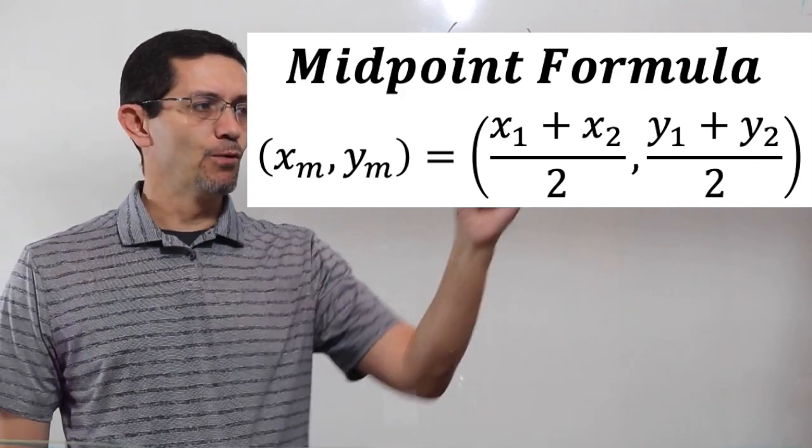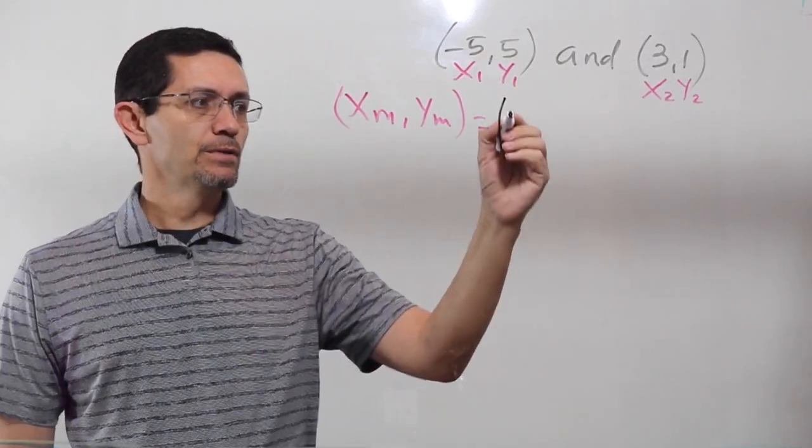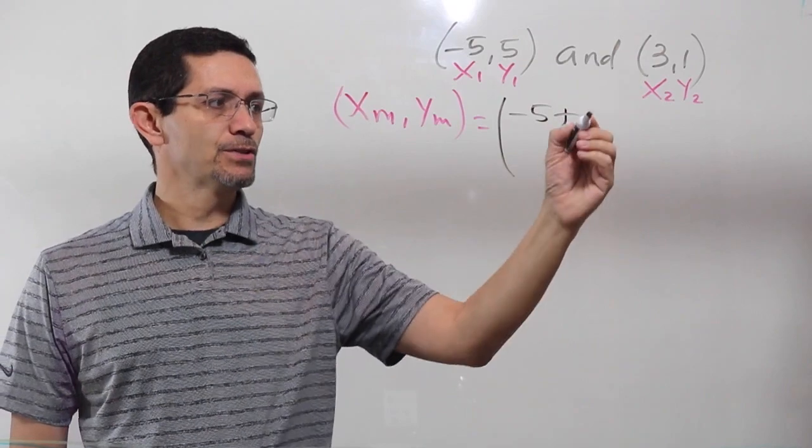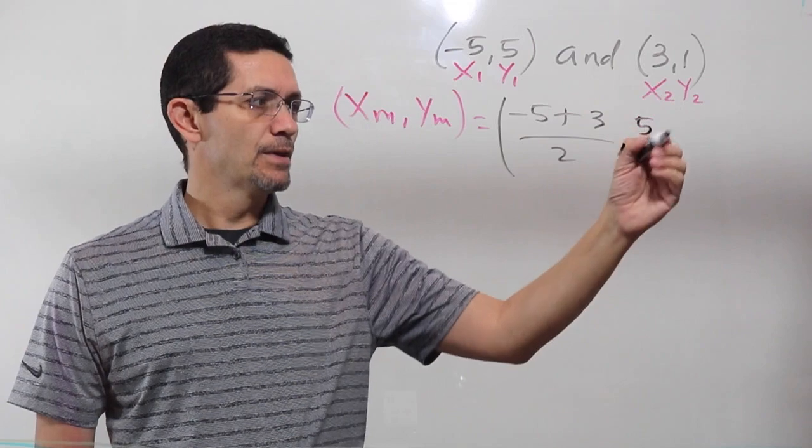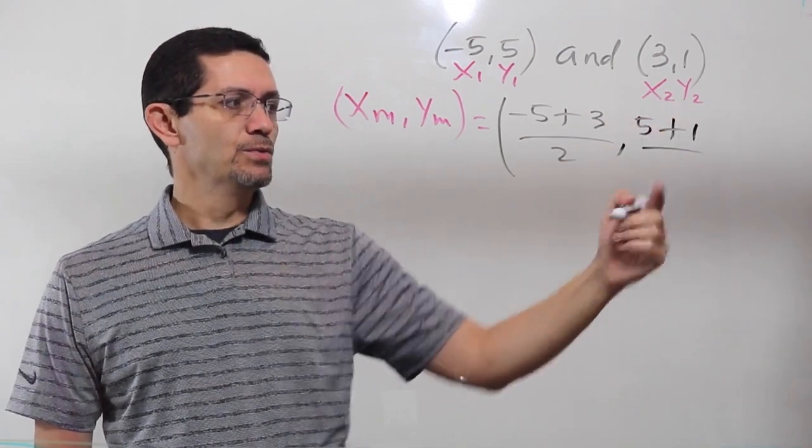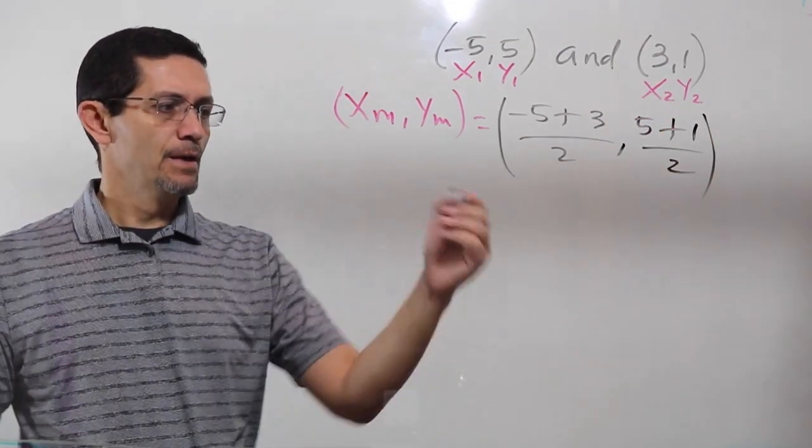Now I'm going to replace my midpoint formula. So it's going to be X1, which is negative 5, plus X2, which is 3, divided by 2, comma. And then Y1, which is 5, plus Y2, divided by 2. And from there, I just solve.